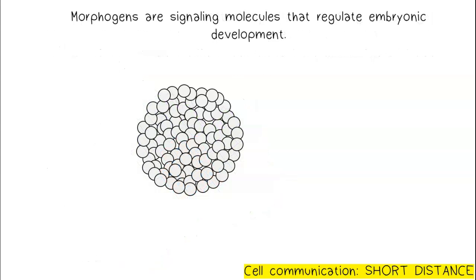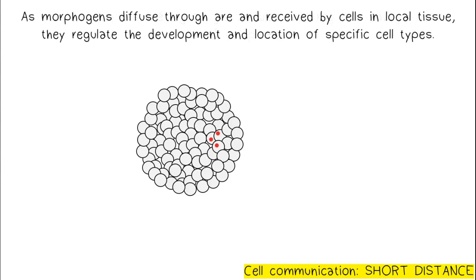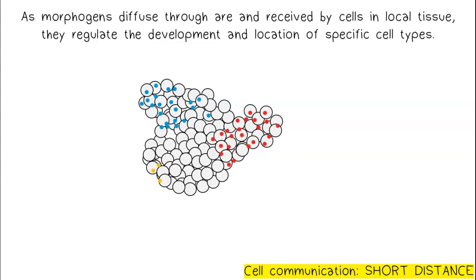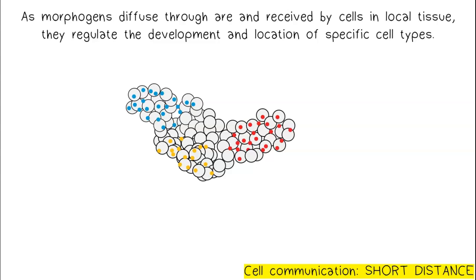Morphogens are signaling molecules that regulate embryonic development. As morphogens diffuse through and are received by cells in local tissue, they regulate the development and location of specific cell types.